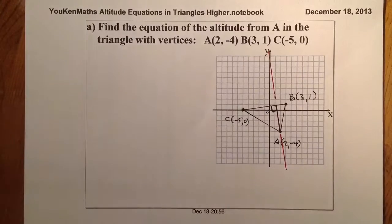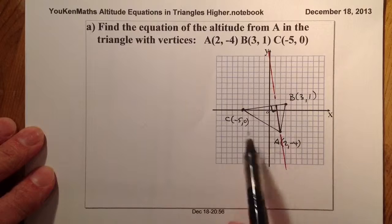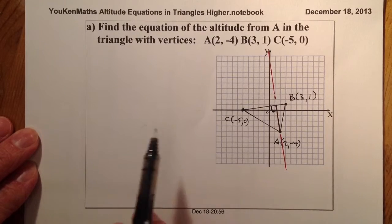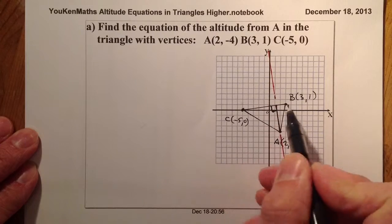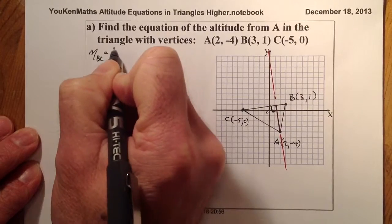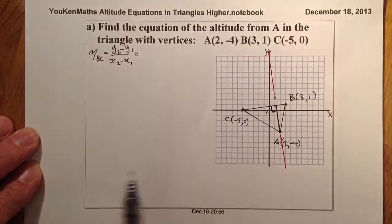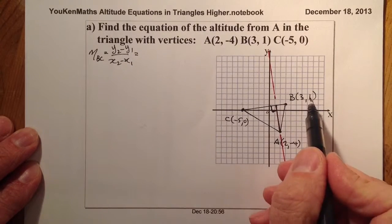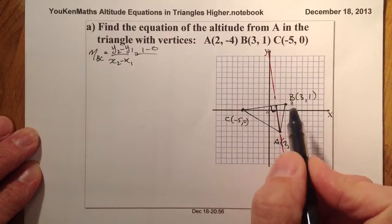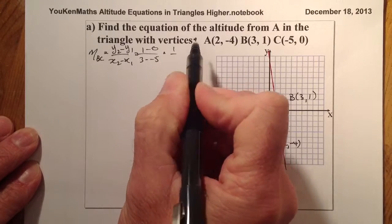Let's go ahead and solve these questions — I'll go through the first one reasonably slowly. I'm going to find the gradient of BC, the line opposite A. That's y2 minus y1 all over x2 minus x1. So that's 1 take away 0, over 3 take away -5, which gives me 1 over 8.